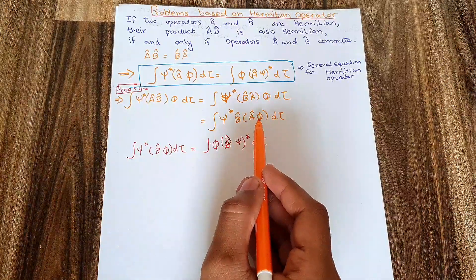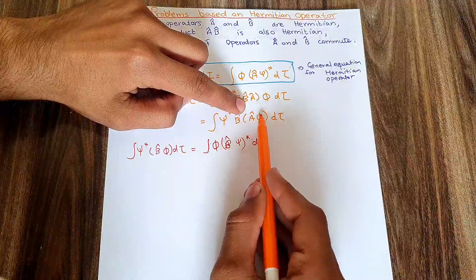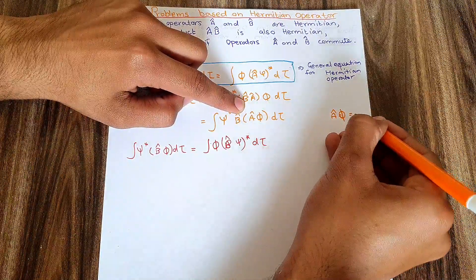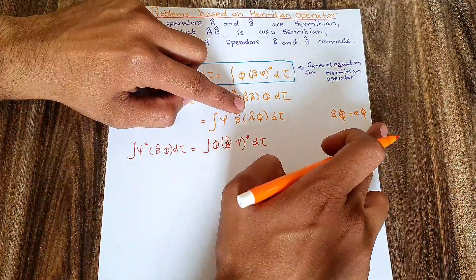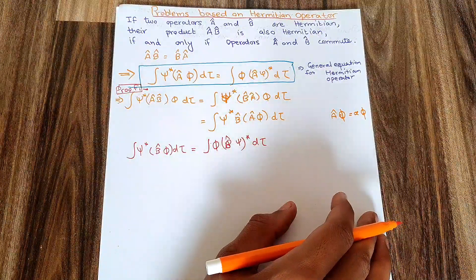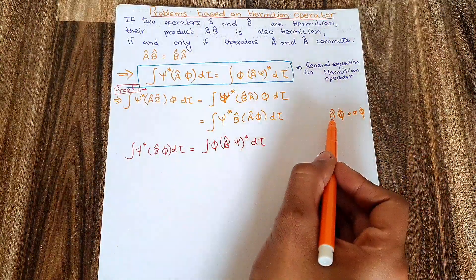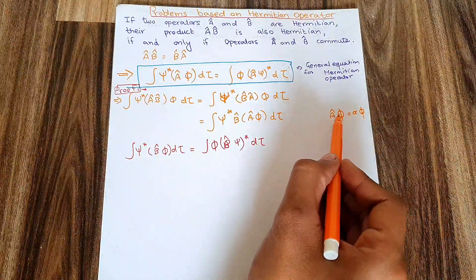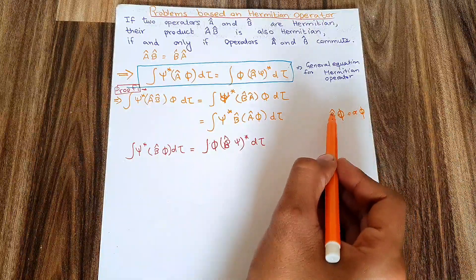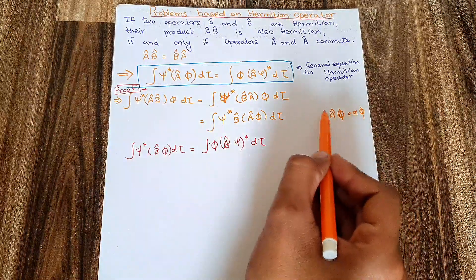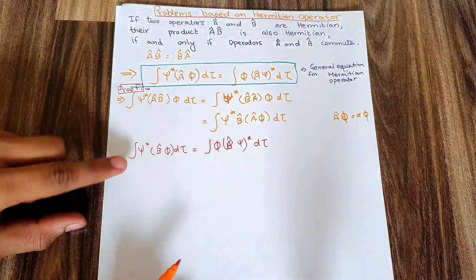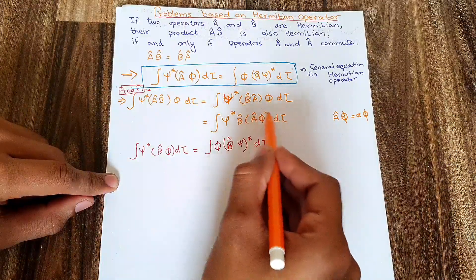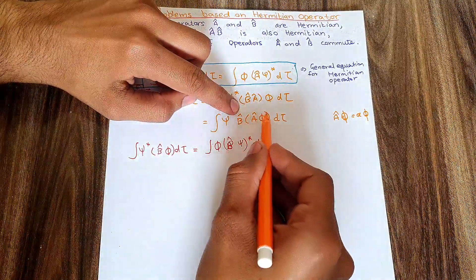When operator A is applied on φ, I get an answer equal to a constant 'a' and the function φ repeated — this is the eigenfunction condition. So instead of writing Â φ I can write a·φ, and instead of writing a·φ I can write Â φ. These two are interchangeable. Now if operator B is applied on Aφ as a whole, I compare this with the left-hand side of the general equation.